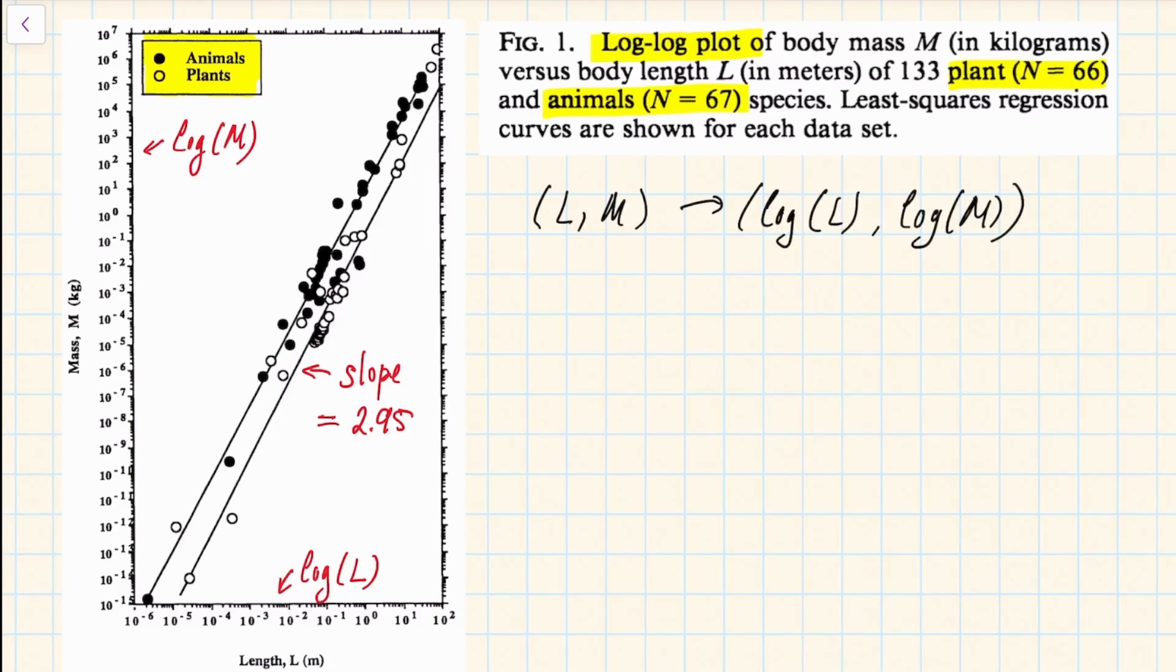And so after we apply this transformation to all these species and then plot them on the x-y axis, we see that these species actually follow very well along this linear trend. And in fact if we fit this so-called least square regression line, we get the line with the slope approximately 2.95.